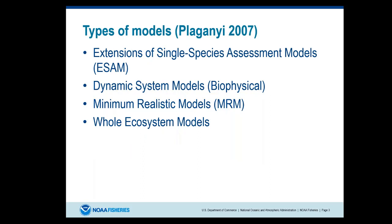There's a wide range of ecosystem models. They can start from basic extensions of single species assessment models, where you're just adding one or two extra interactions — whether with a prey species or with climate — onto existing single species models. Then you can have a dynamic system model, which is a representation of both bottom-up and top-down processes. You can think of those as individual-based models or NPZ models — nutrient-phytoplankton-zooplankton type models.